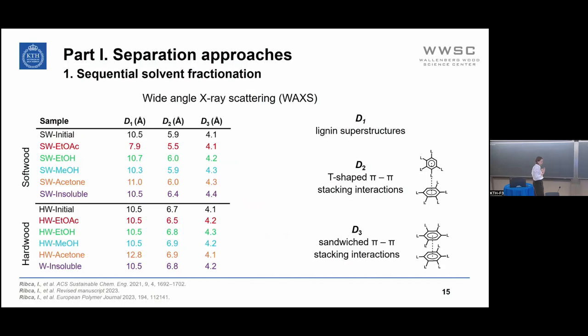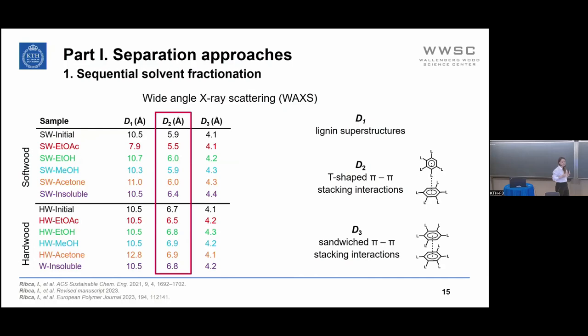We then asked how these lignin fractions look at the nanoscale, so we performed wide-angle X-ray scattering (WAXS) and identified three repeating features: D1 associated with lignin superstructures, D2 with T-shaped pi-pi stacking interactions, and D3 with sandwich stacking interactions. The biggest difference between softwood and hardwood lignin fractions was in D2, the T-shaped pi-pi stacking distance, which is larger in hardwood by almost one angstrom, indicating that hardwood lignin has a more open structure.